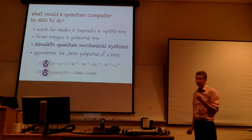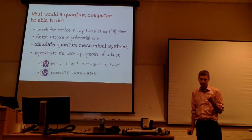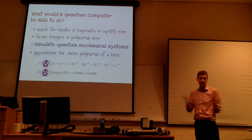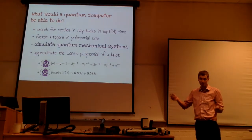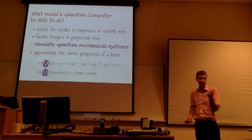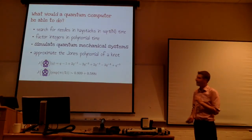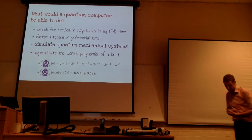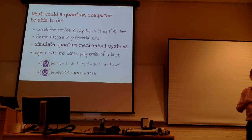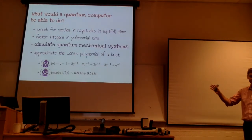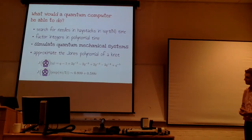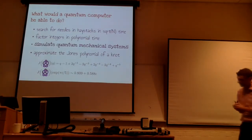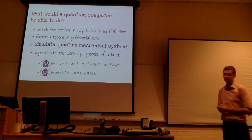The first thing is that they can search for needles in haystacks. If you were to sit down and try to find a needle in a haystack, you'd expect it to take an amount of time proportional to the number of bits of straw — you just look at each one and check. A spectacular thing that quantum computers can do is find that needle in time proportional to the square root of the size of the haystack. The other thing they can do is factor integers quickly.